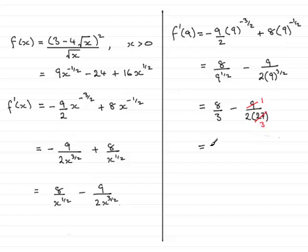So what we've got is 8 thirds, minus, sorry, I said 9, I meant 1, sorry, 1 over 2 threes, which is 6.